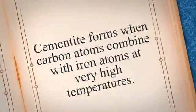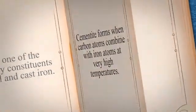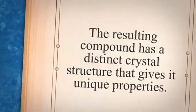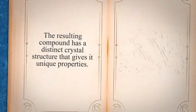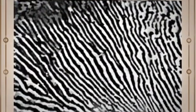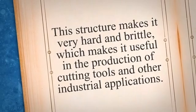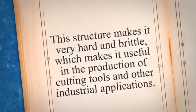Cementite forms when carbon atoms combine with iron atoms at very high temperatures. The resulting compound has a distinct crystal structure consisting of layers of iron atoms separated by layers of carbon atoms, which makes it very hard and brittle.